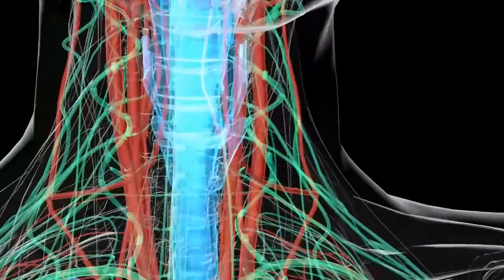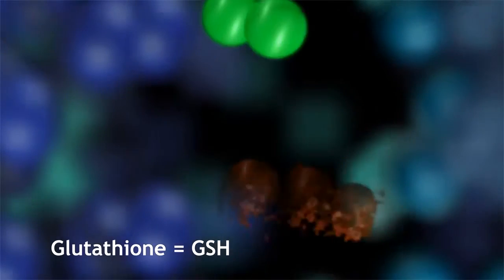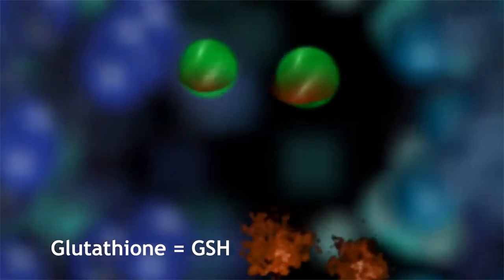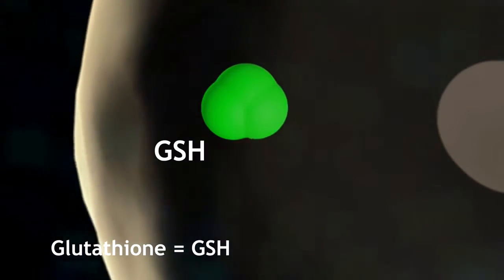When glutathione enters your digestive tract, it is quickly broken down and doesn't make it to your cells. The way to raise glutathione levels in your body is to provide the building blocks or precursors so that your cells can make glutathione.